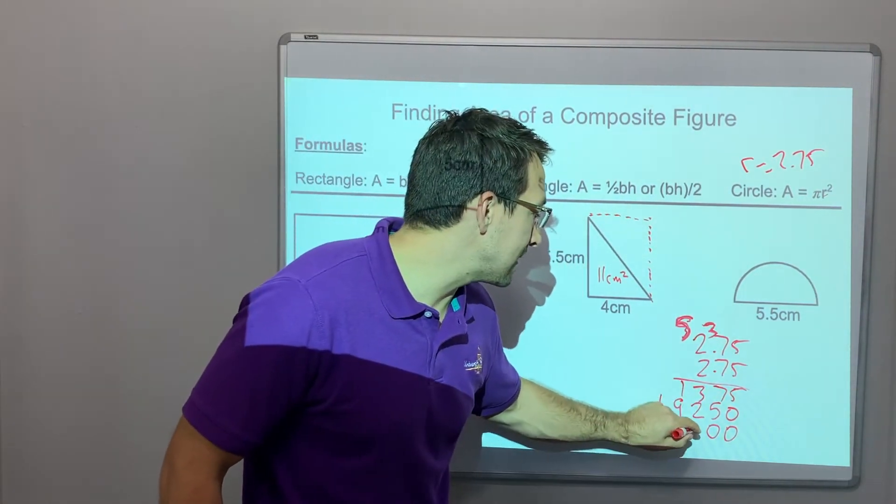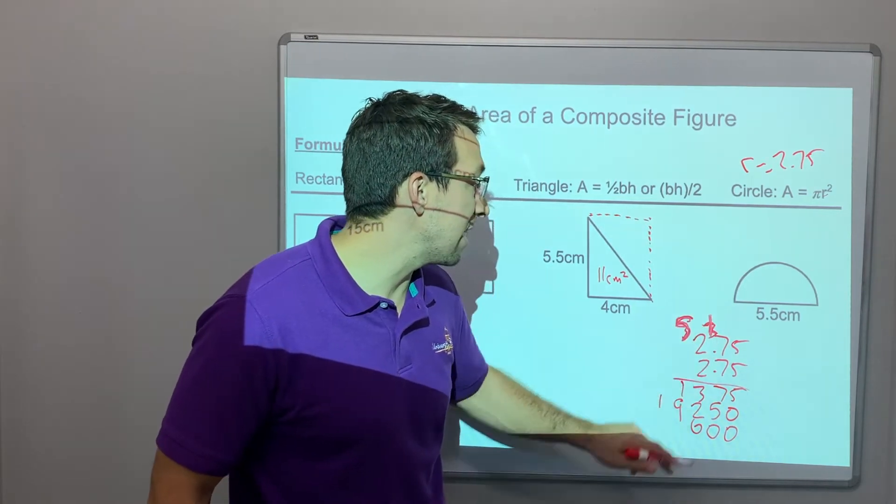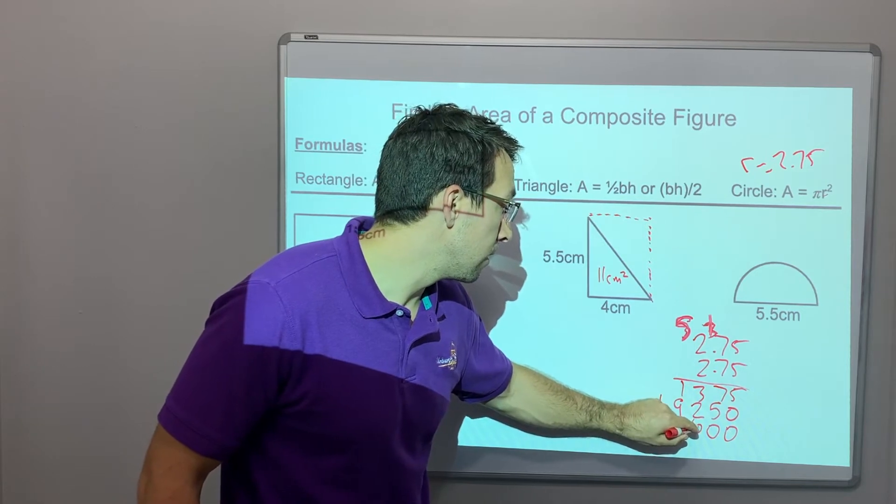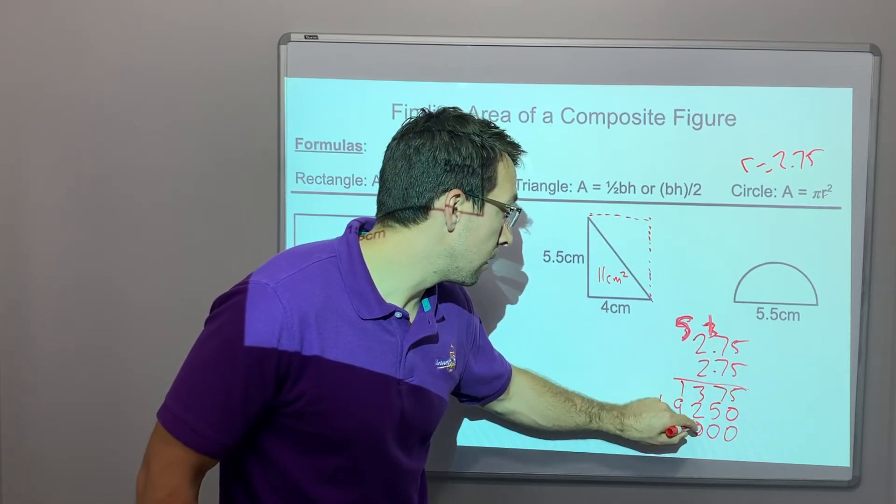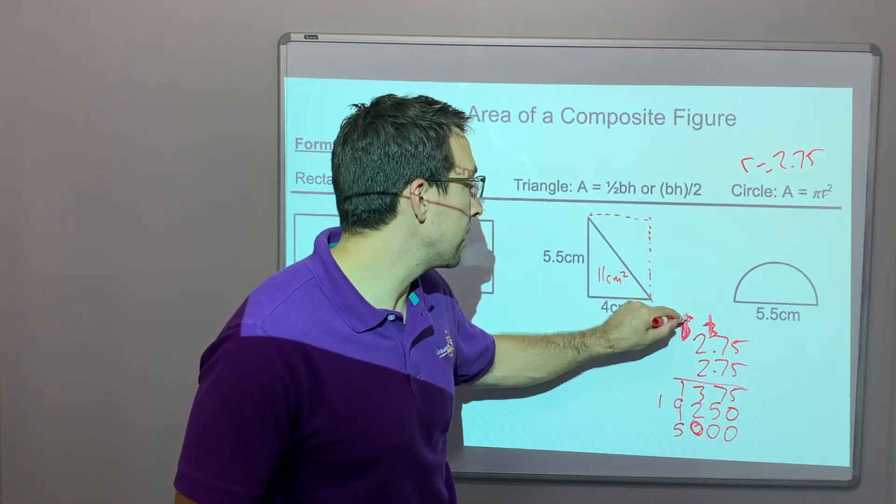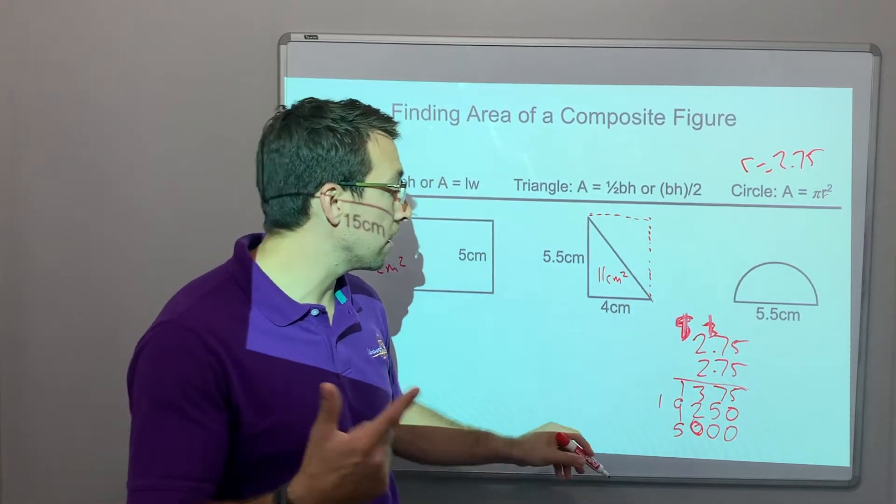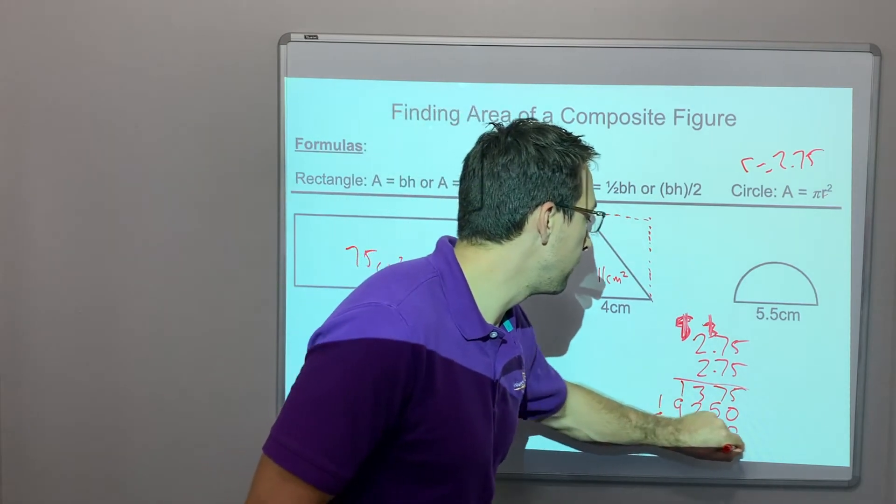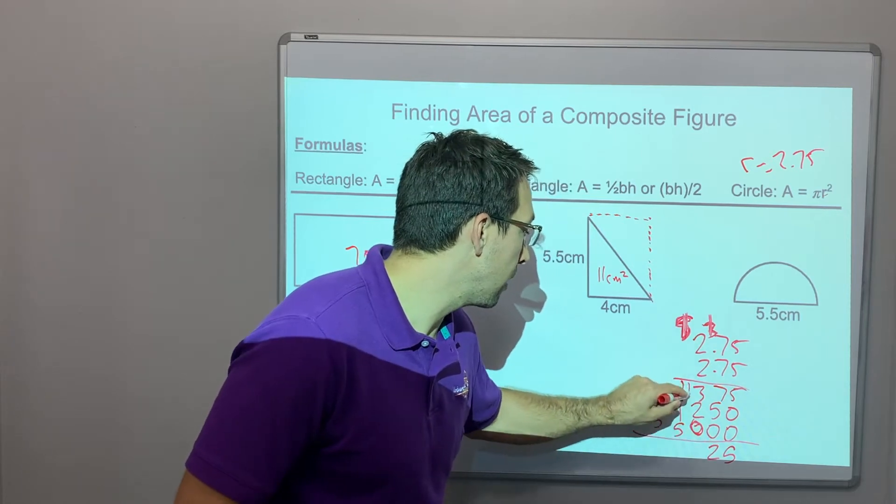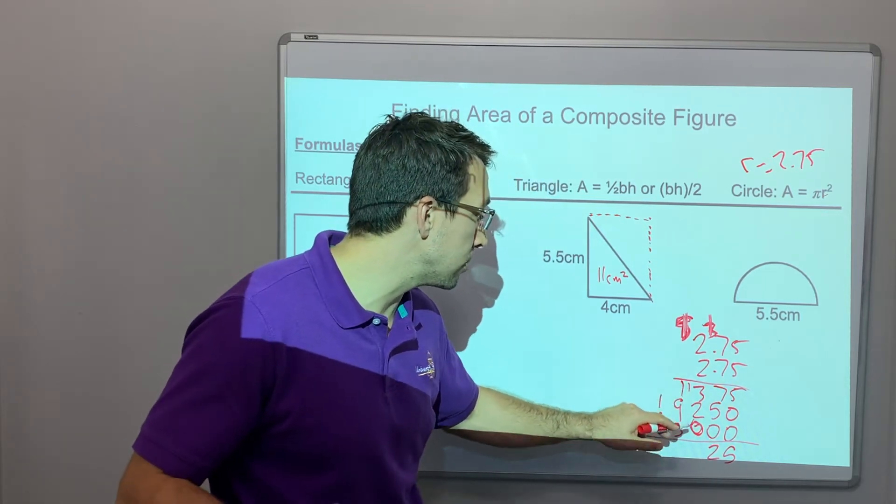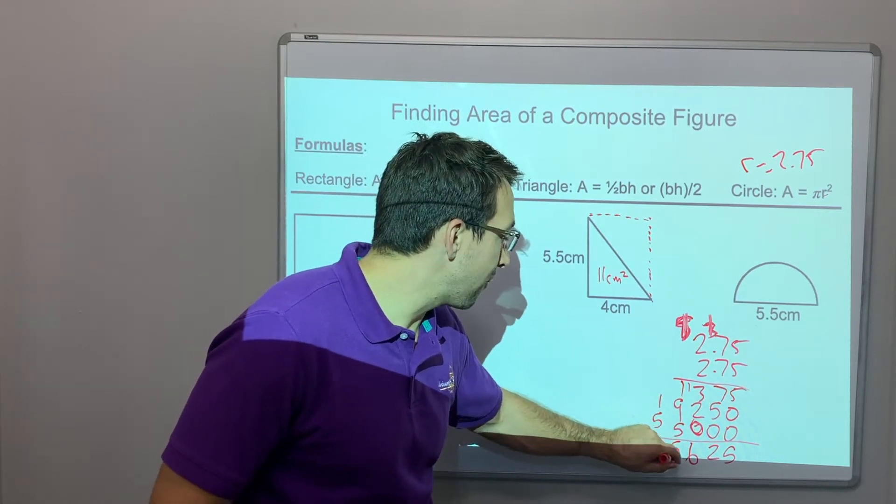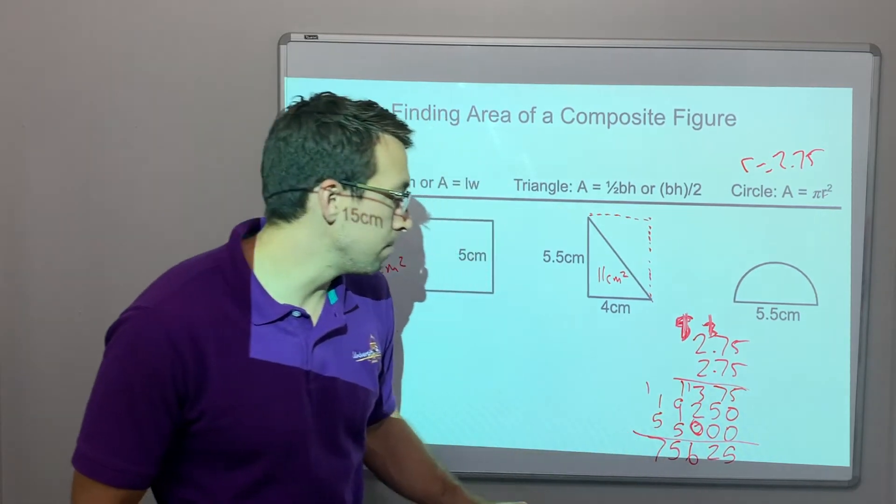2 times 5 is 10. Carry over the 1. 2 times 7 is 14, plus 1 is 15. Okay, 15. Now it's got to be 18 now. 2 times 2 is 4, plus 1 is 5. Boom! So 5, 7 and 5 is 12. Carry over the 1. 1 plus 3 is 4, plus 2 is 6. 1 plus 9 is 10, plus 5 is 15.